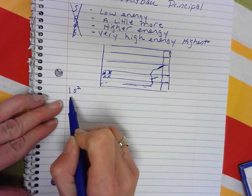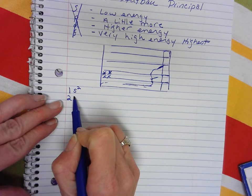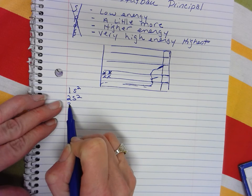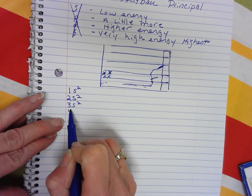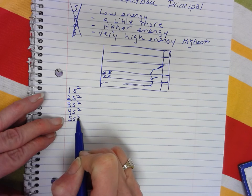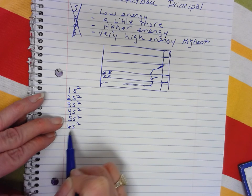So you go ahead and write 1s2, 2s2, 3s2, 4s2, 5s2, 6s2, and 7s2.